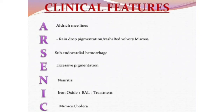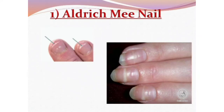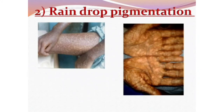Continuing the mnemonic: I for iron oxide, and C for mimics cholera. The treatment is BAL. You can see the Aldrich-Mees nail in this picture — the white coloration on the nail indicates arsenic poisoning. Raindrop pigmentation is also visible on the hands and thigh, confirming arsenic poisoning.